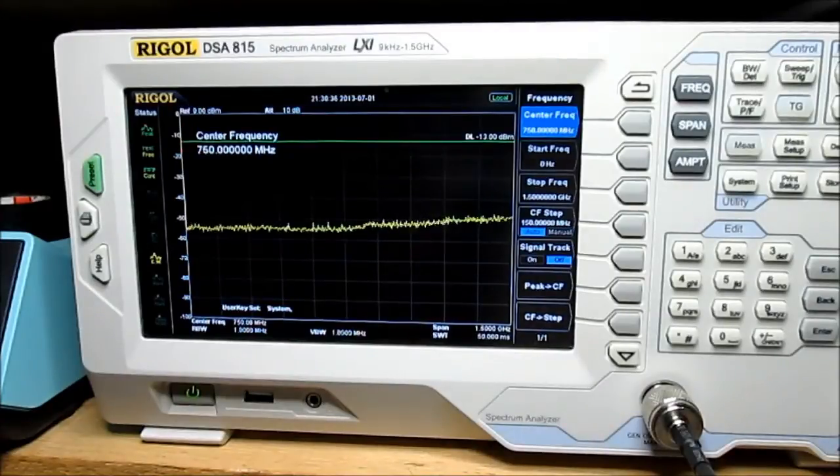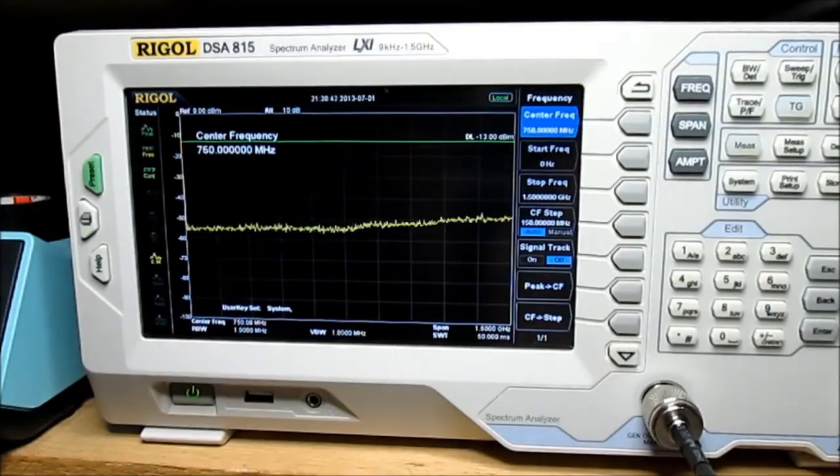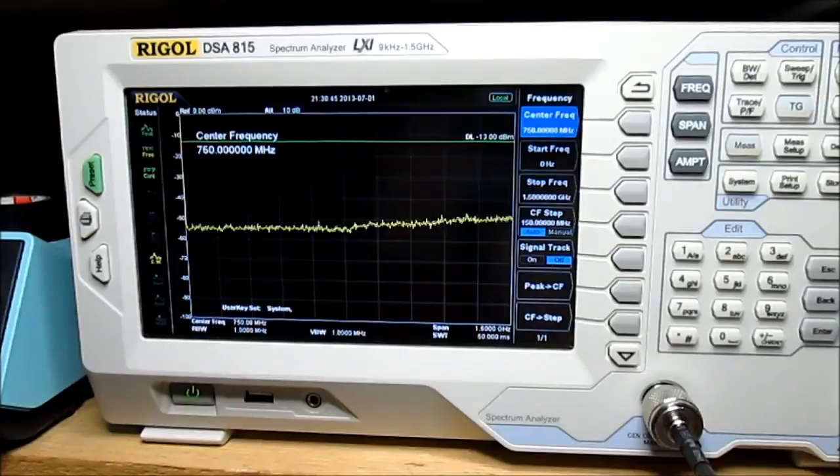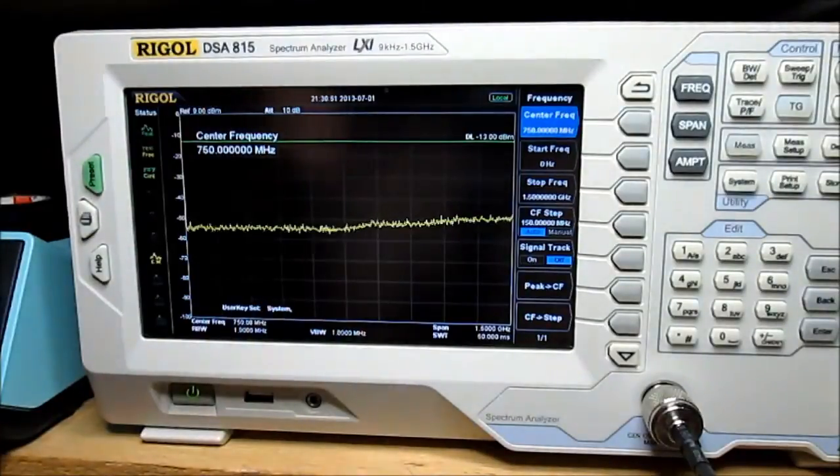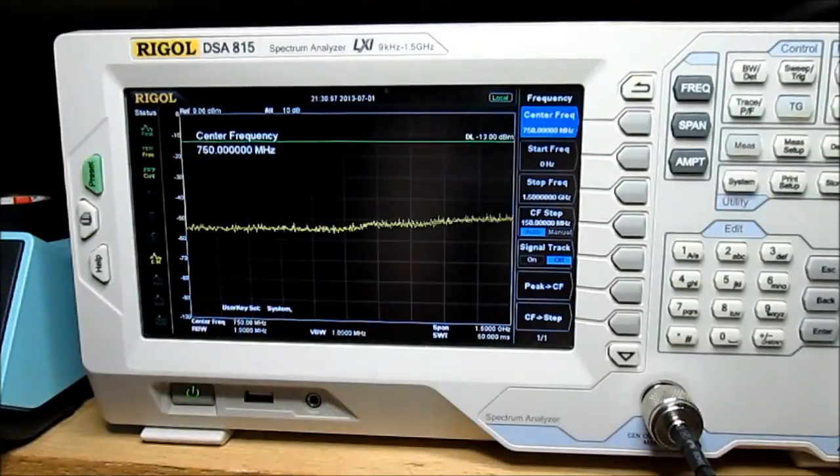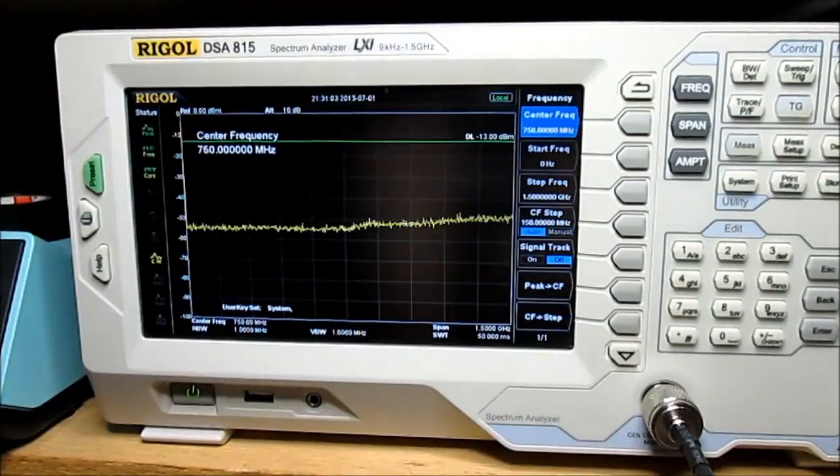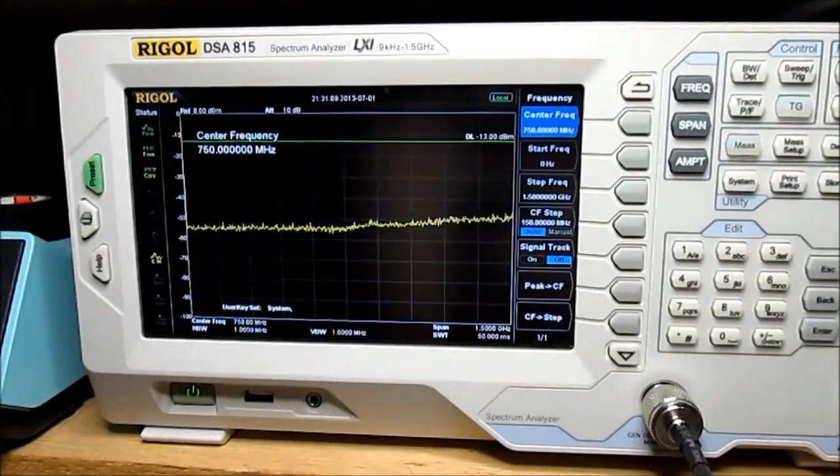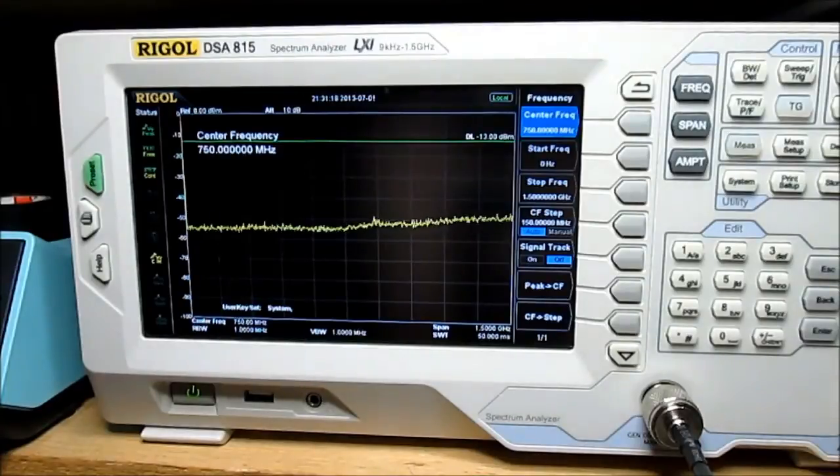Alright, so now we're looking at the Rigol DSA815 spectrum analyzer. And what we're going to do is put a barrel connector like so in line with the cables that I have on here, the RF cables, and normalize the sweep with that particular setup and then replace the barrel connector with the RF attenuator.